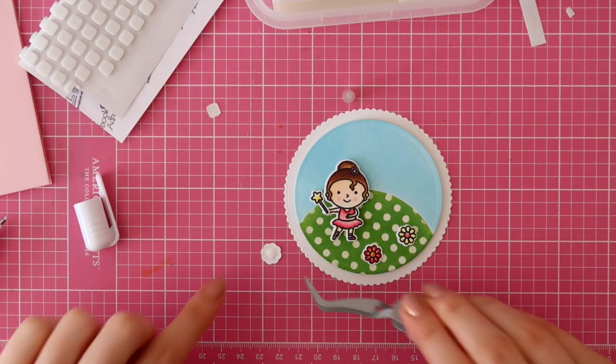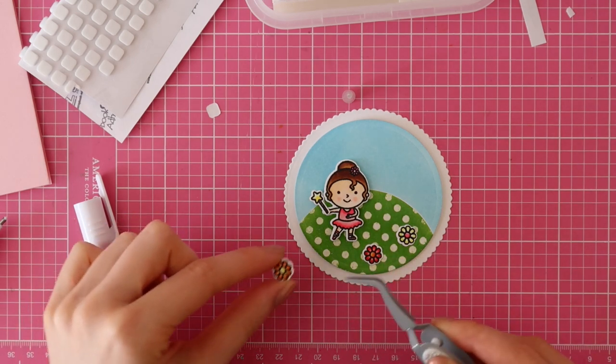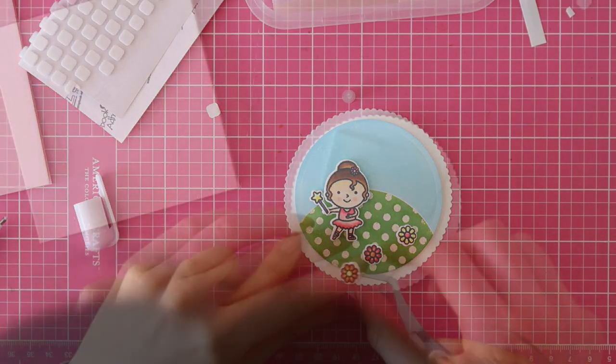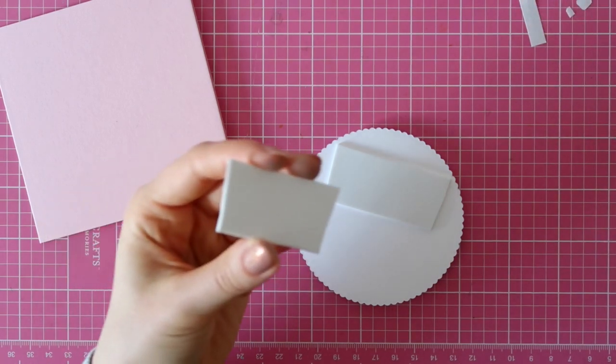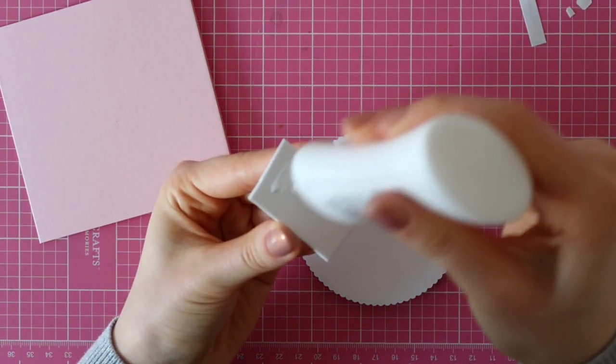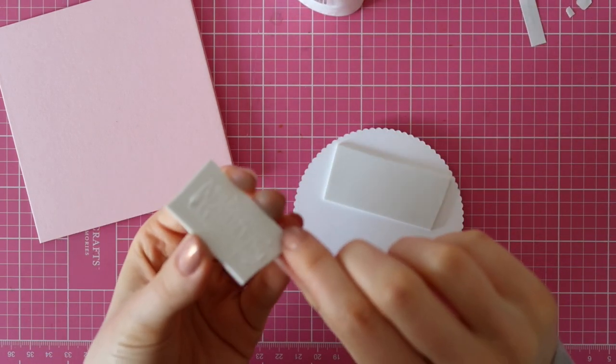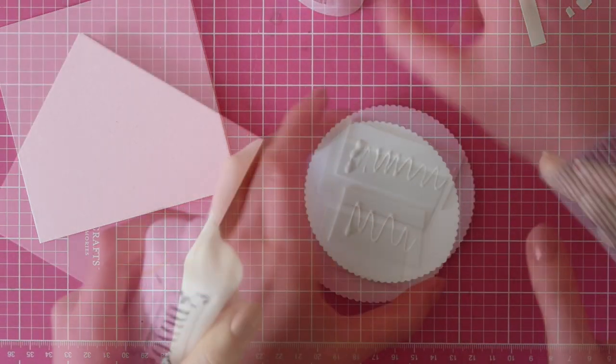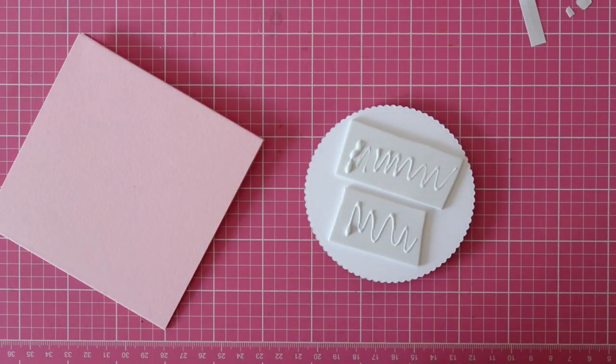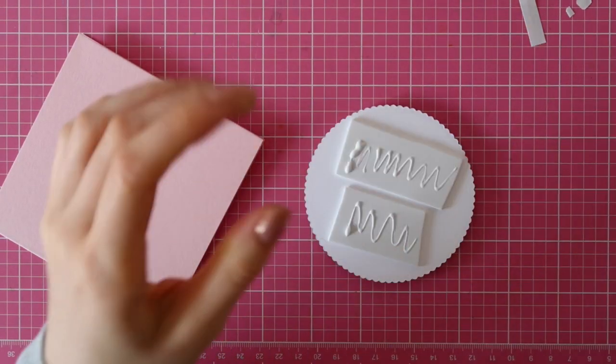I really like to work with this glue pen because the adhesive is really strong and you can also adhere really teeny tiny images with it since it's such a fine little pen. To adhere the scalloped circle on my note card, I used some scraps of fun foam and the Tonic Nuvo Deluxe Adhesive.